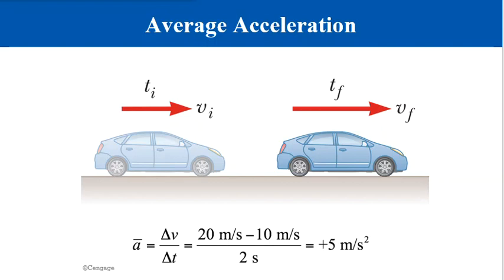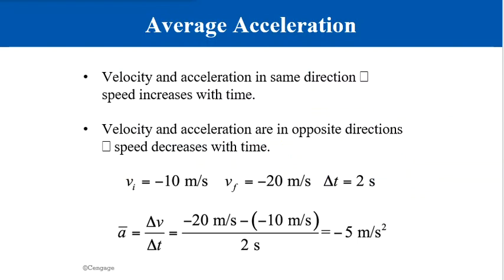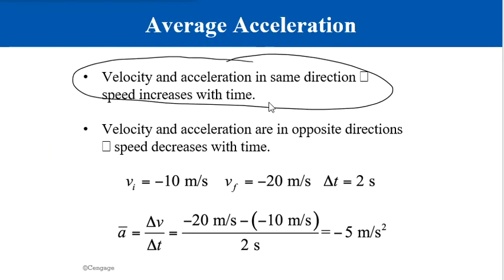You can omit the positive sign since it is understood to be positive, but if acceleration is negative, you must write the negative sign. For motion in a straight line: if velocity and acceleration are in the same direction, the object is speeding up. If velocity and acceleration are in opposite directions, the object is slowing down.